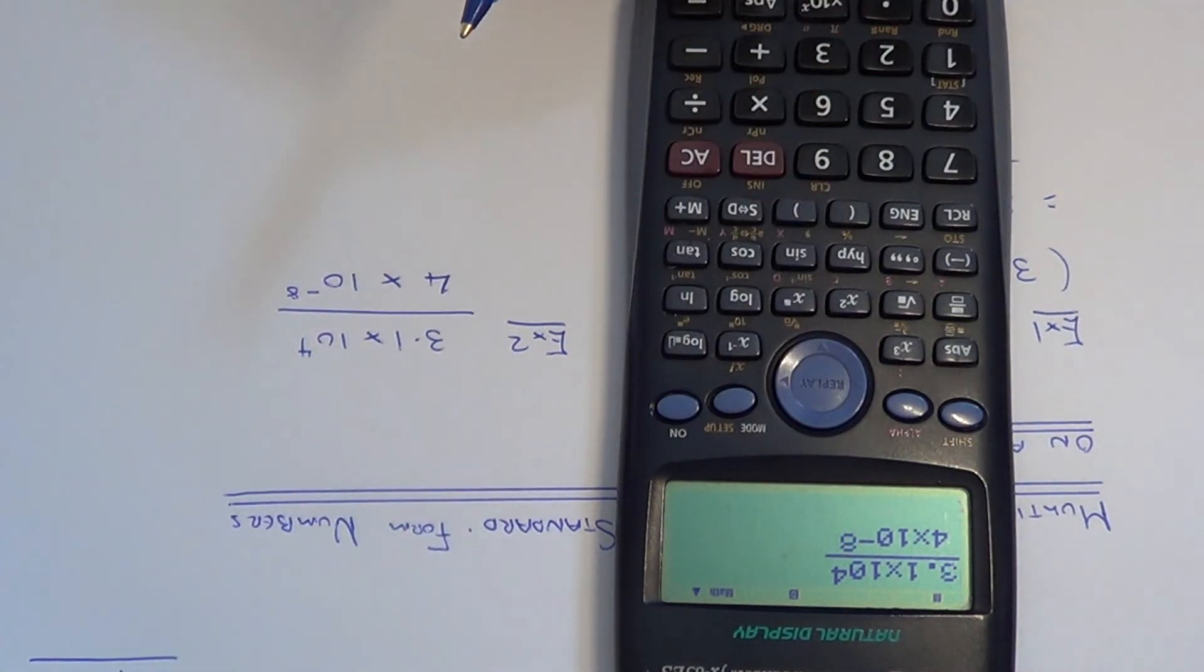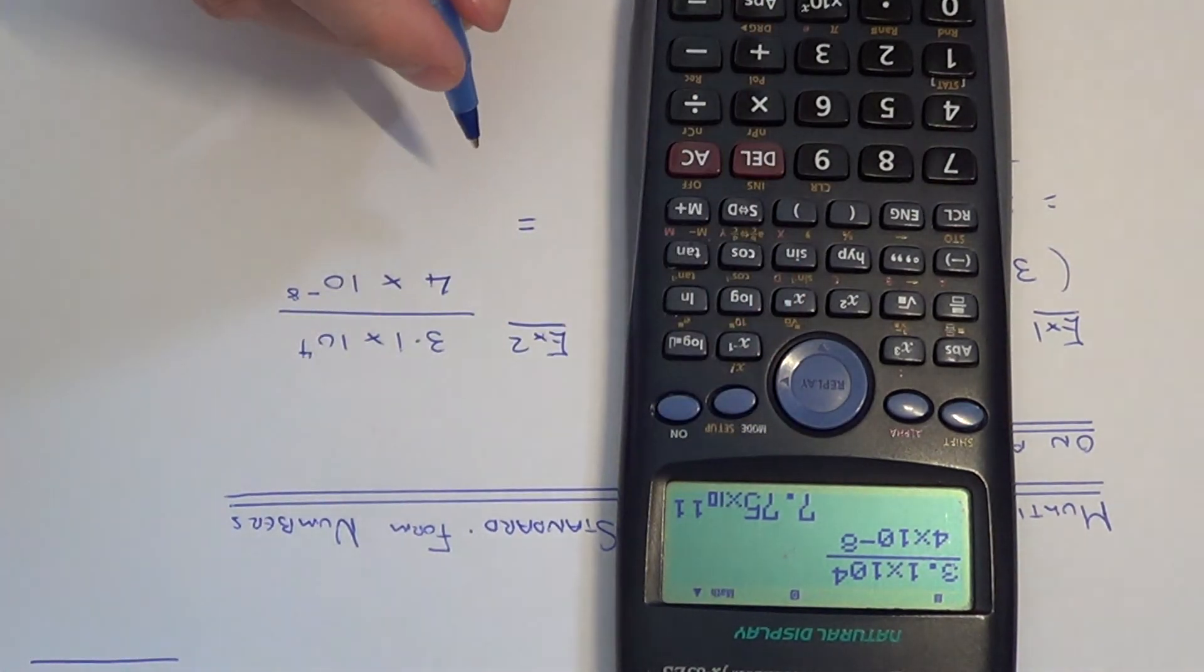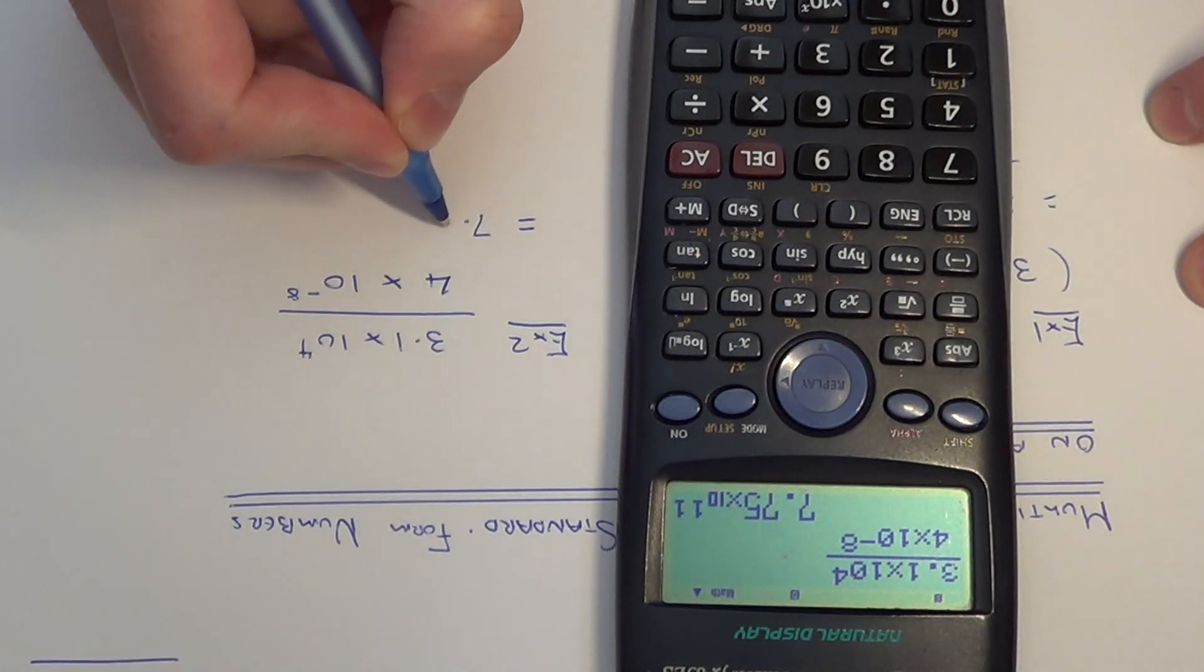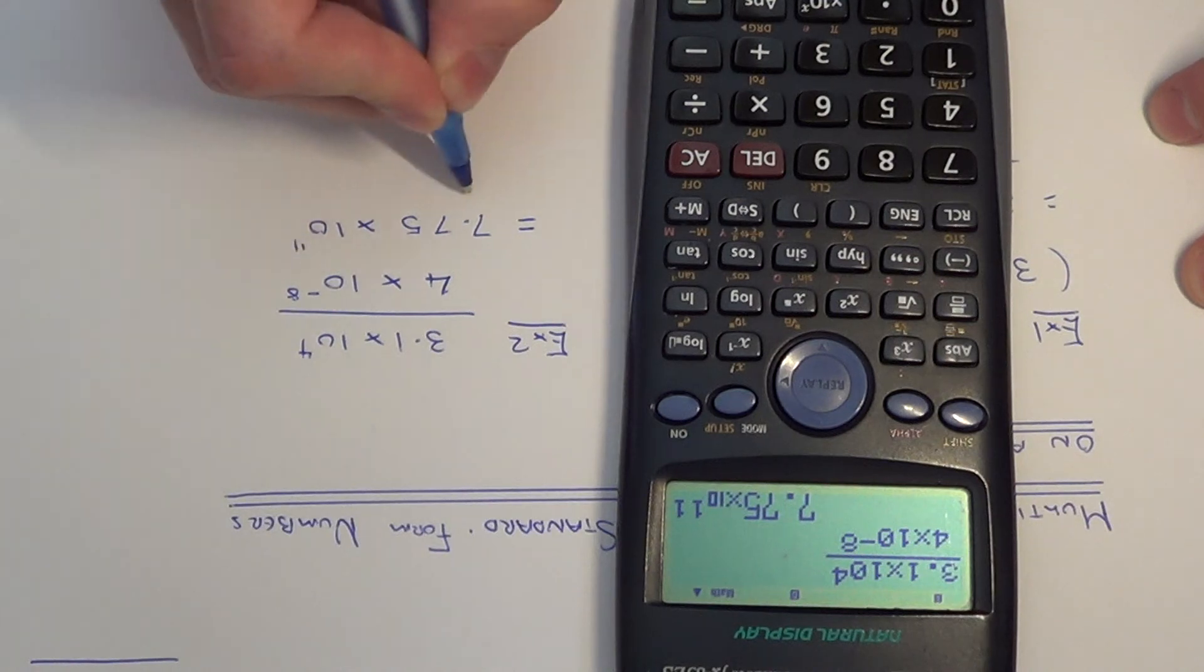We have typed it in, so if we hit equals, we get our answer. It has converted the answer into standard index form, so there is nothing else to do. We get 7.75 times 10 to the power of 11.